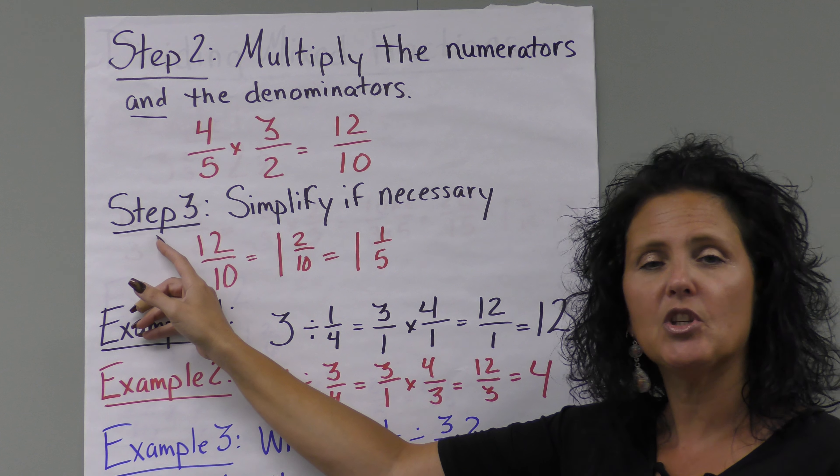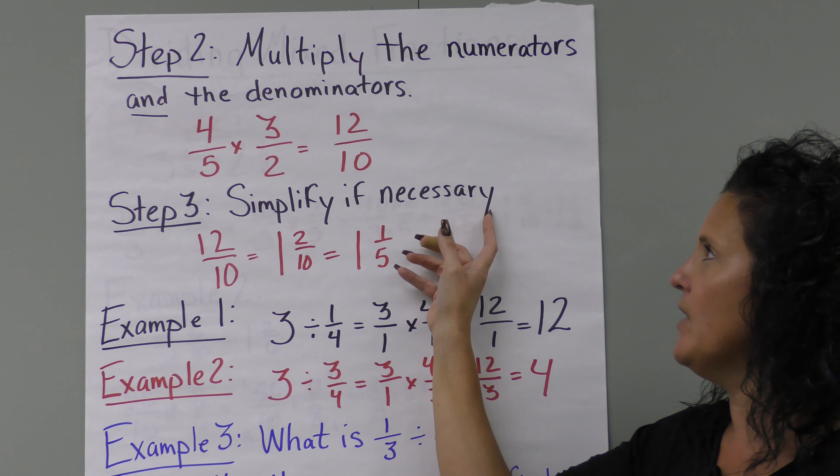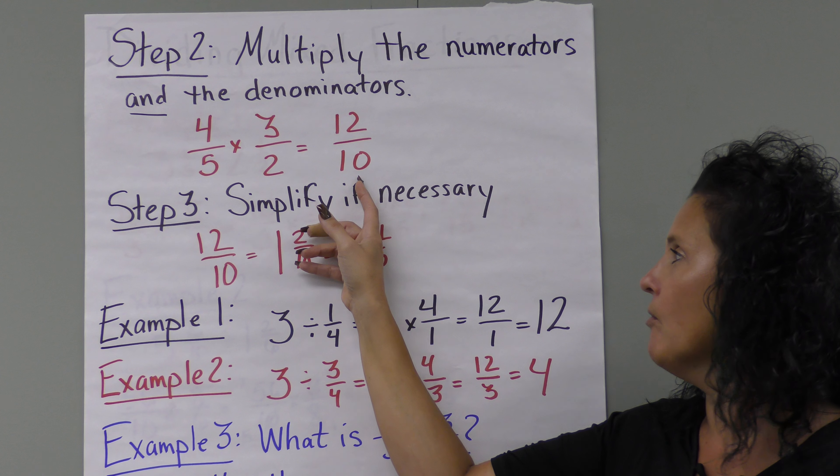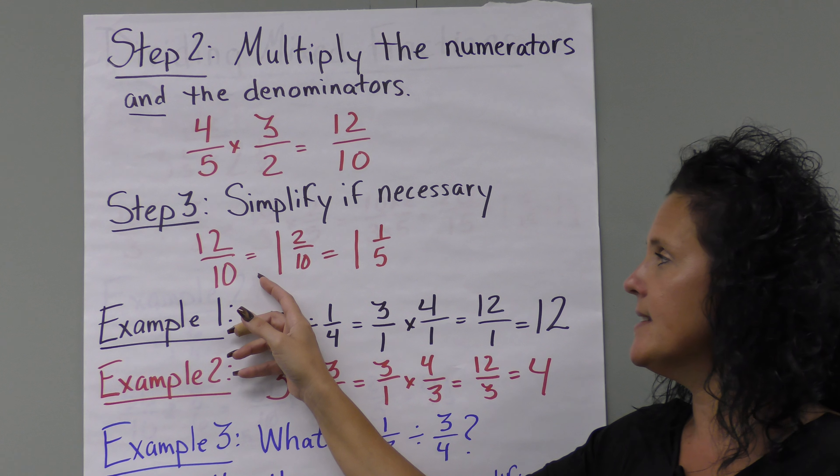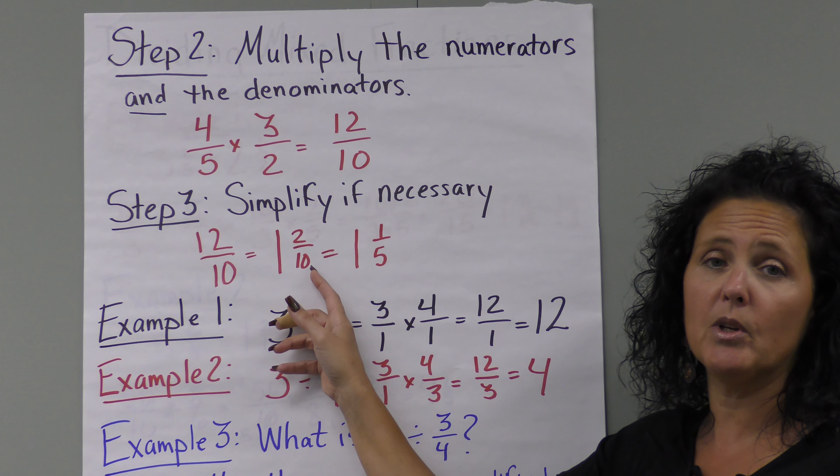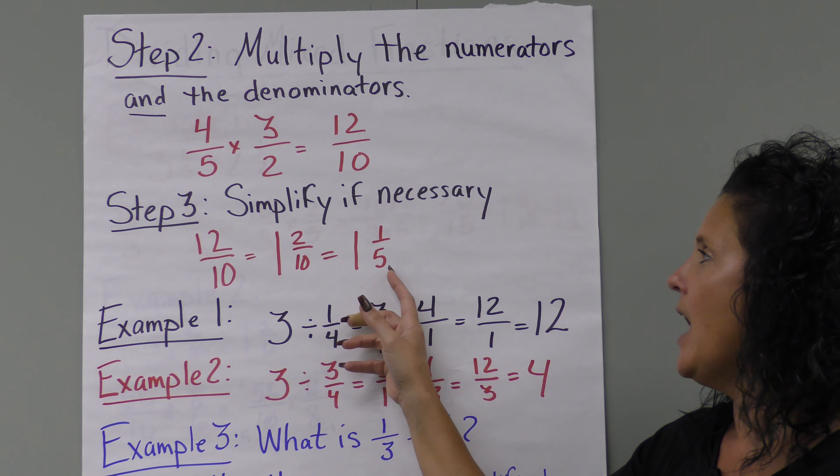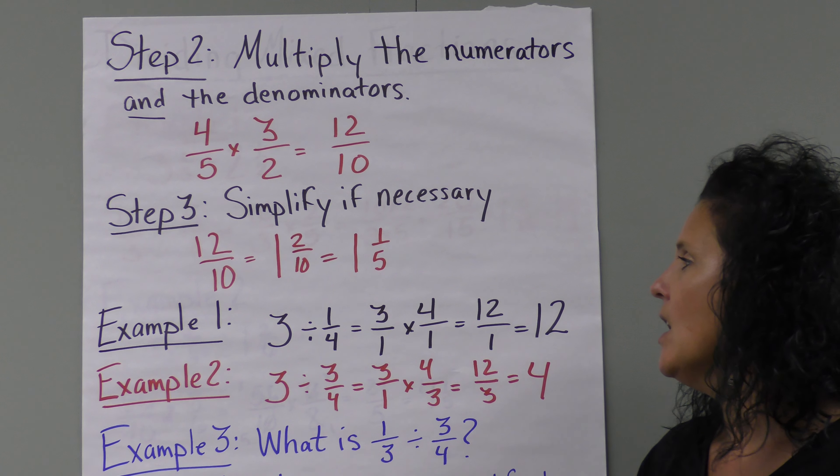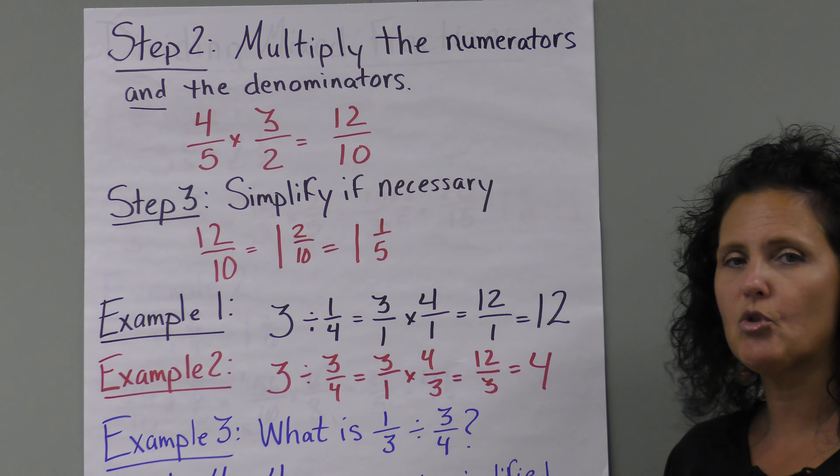Step three, which always comes last, is to simplify if necessary. This one we can change to a mixed number. Twelve-tenths equals one and two-tenths, but we can also reduce that to one and one-fifth. This is our final answer. Let's look at a couple other examples.